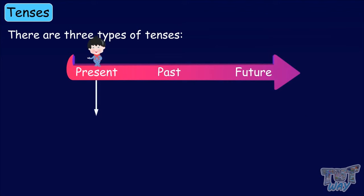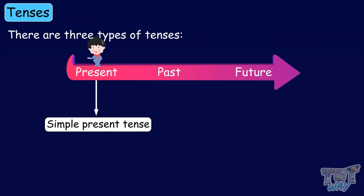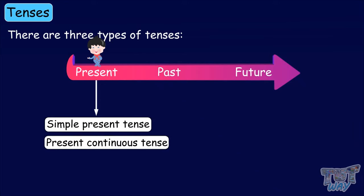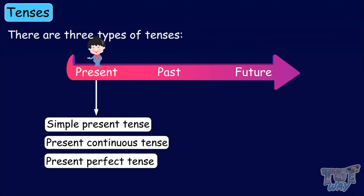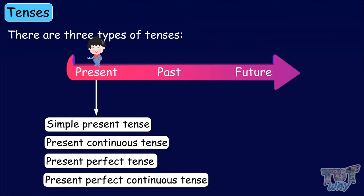Present tense is further divided into four types: simple present tense, present continuous tense, present perfect tense, and present perfect continuous tense. We will learn about these tenses in detail in our next assignment.